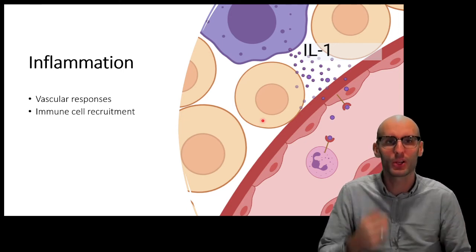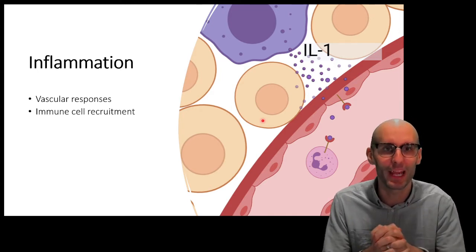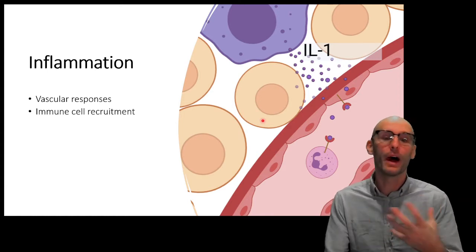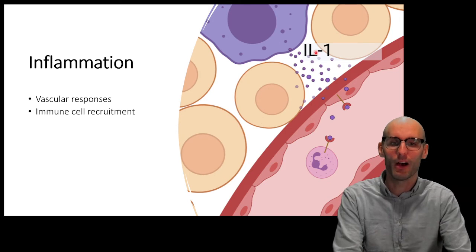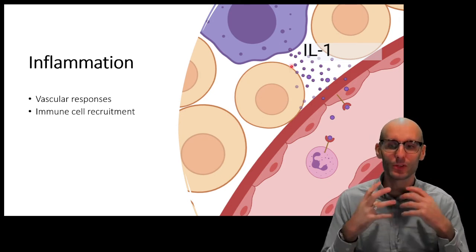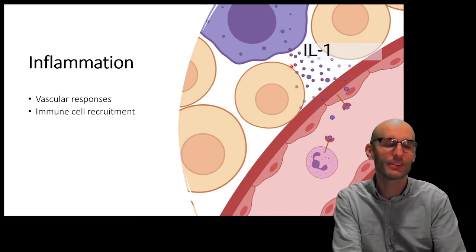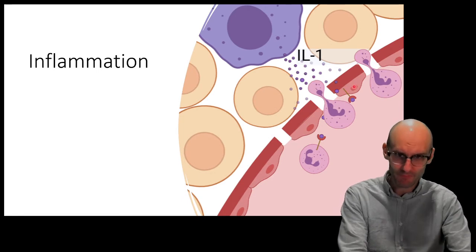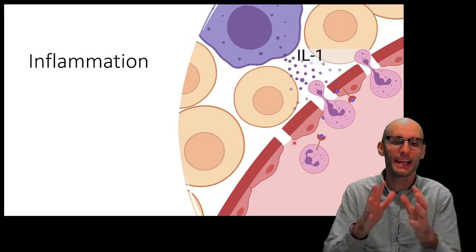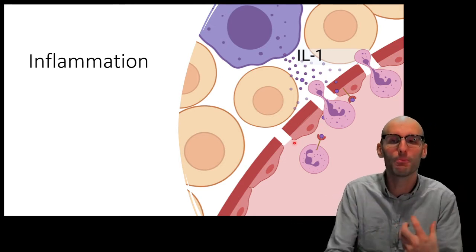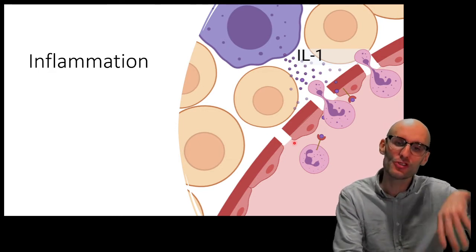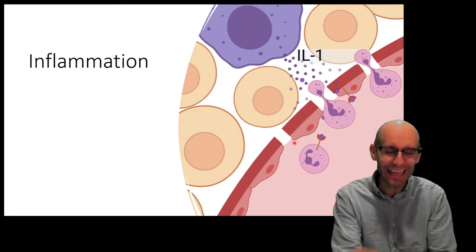Cytokines are protein signalling molecules — the master communicators of the immune system. There are nearly 120 different cytokines. IL-1 (interleukin-1) is one that I personally research, and it's a massive signalling molecule for inflammation. It signals both the vascular immune responses and immune cell recruitment and activation. We can see the tight junctions in the blood vessels have now broken down; the blood vessel has widened to get more blood to the site of tissue damage or infection, and neutrophils and other immune cells are now migrating into the tissue.